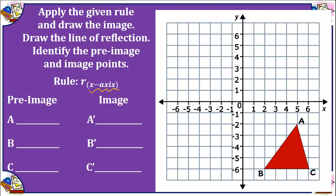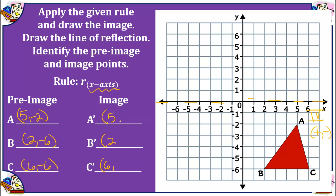Let's reflect across the x-axis starting in quadrant 4, which has positive negative coordinates. A is (5, −2), B is (2, −6), and C is (6, −6). Reflecting across the x-axis, all x-values on the image remain the same and the y-coordinates change to the opposite. So A-prime is (5, 2) — two units above the line of reflection. B-prime is (2, 6) — six units above where B was six units below. And C-prime is (6, 6). That is reflecting across the x-axis.